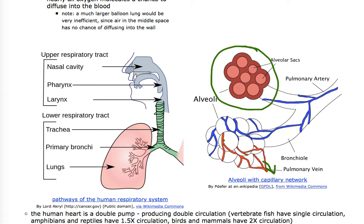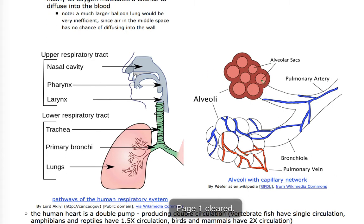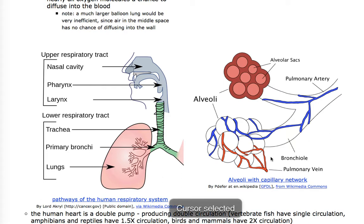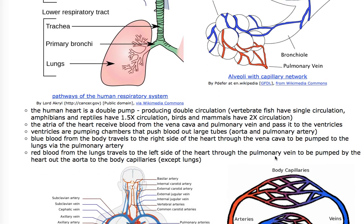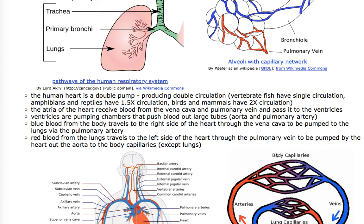Without sufficient capillary exchange on your alveoli, you would go into shock and die. Shock is a lack of oxygenation to body tissues. The human heart interacts with all this by pumping blood around the capillary beds of the alveoli and the body cells.